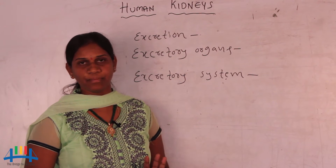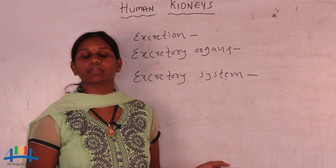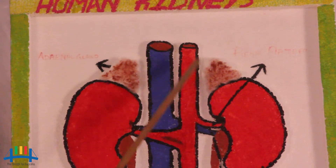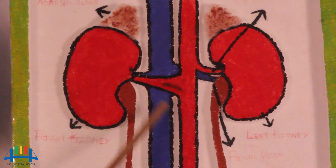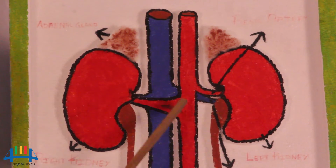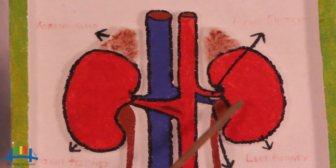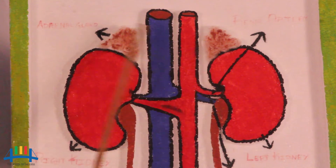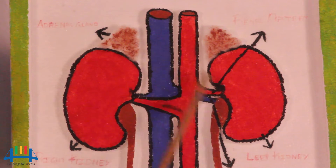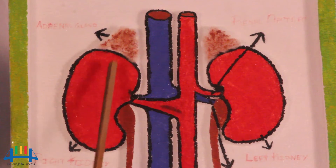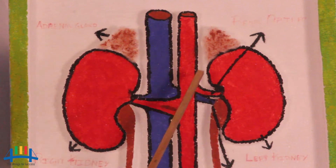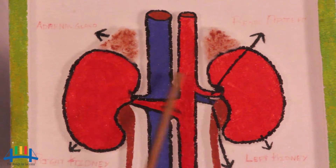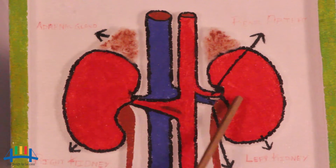We can use this teaching aid to understand kidney structure, function, and location. This is a human kidney model. When you observe the human kidneys, there are two — the right kidney and the left kidney. Both are present on the sides of the backbone. Slightly, the left kidney is positioned lower compared to the right kidney due to the presence of the liver.